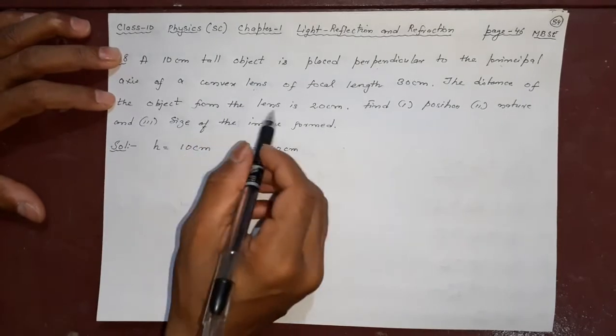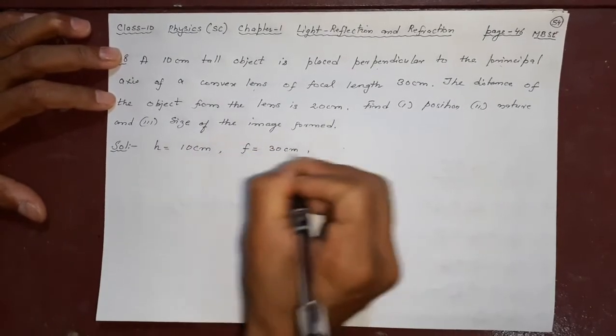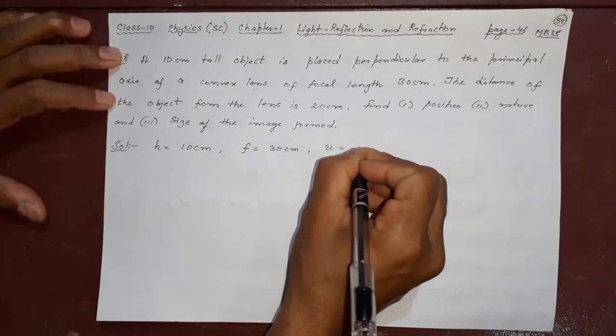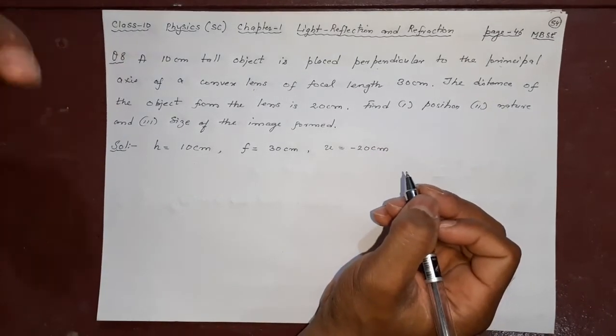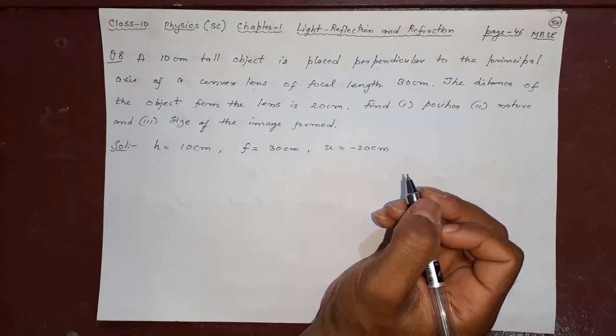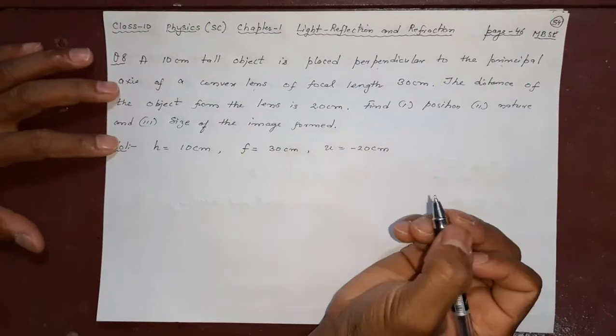The distance of the object from the lens is 20 centimeter, the object distance is u equal to minus 20. The object distance is always negative. Do not confuse with this, because lens or mirror, you will always keep the object on the left side of the lens or mirror, so it is always negative.